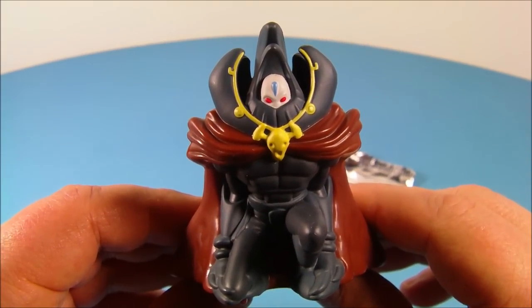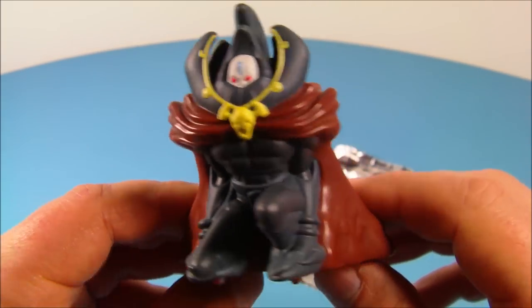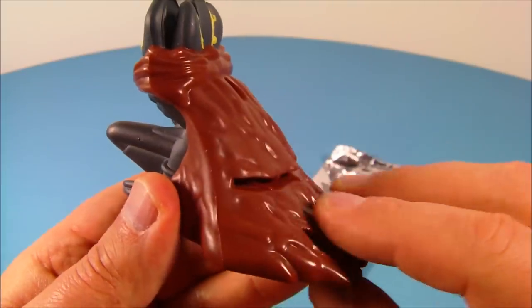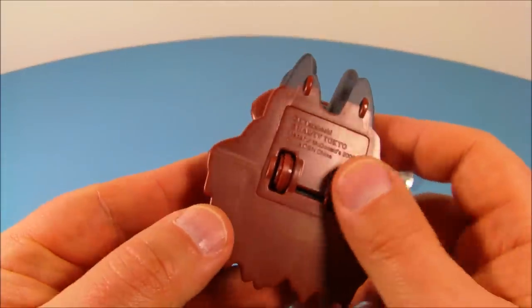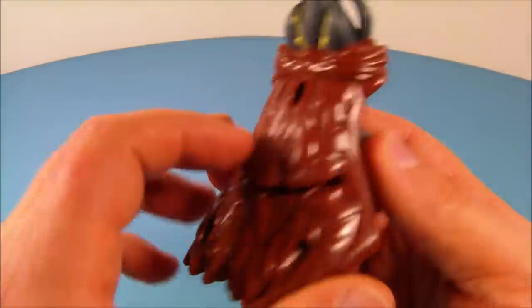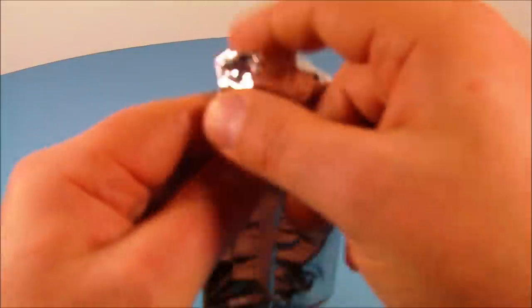Step number six is the Destiny Hero Doom Lord. This guy looks great. Look at this. It's got this awesome looking cape coming down his back. Wow. And underneath here you got the pullback feature going on again. And the slot right there for the cards. And here is the pack of cards he comes with.